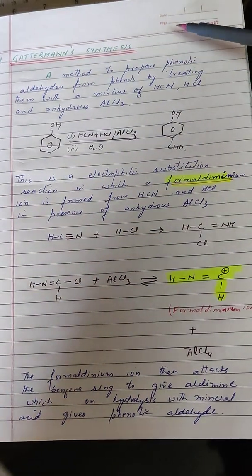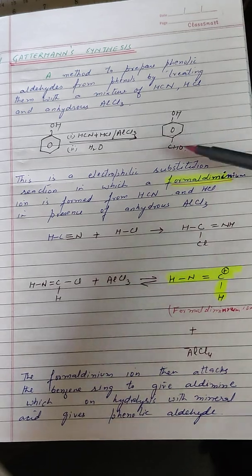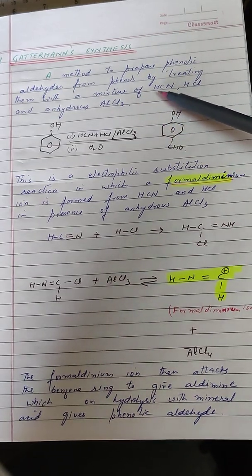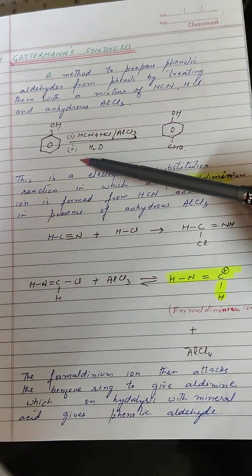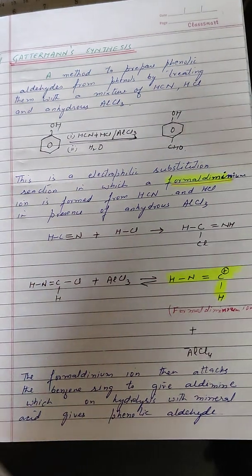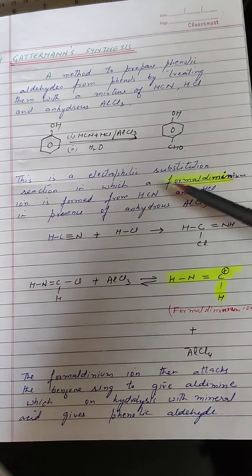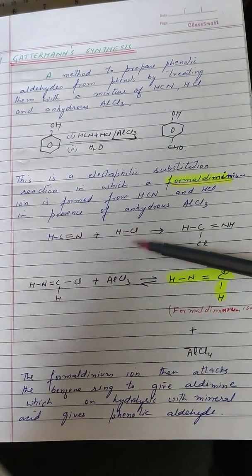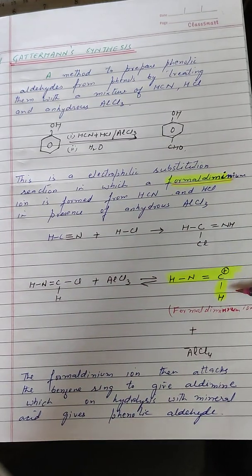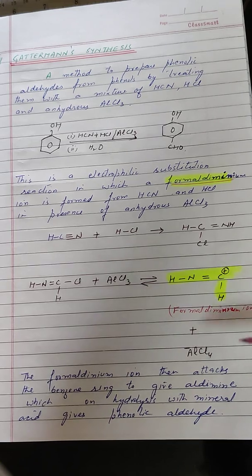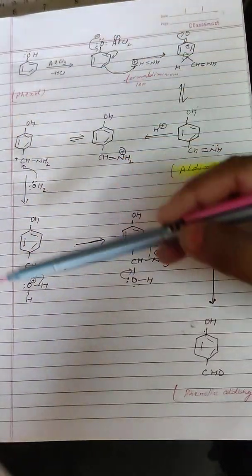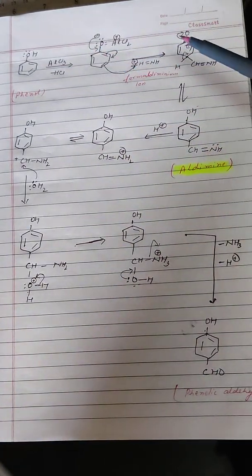Now we take up Gattermann synthesis, which is a method to prepare phenolic aldehydes. Phenol is treated with a mixture of HCN and HCl in the presence of aluminium chloride, followed by hydrolysis in the second step, to give phenolic aldehydes. This reaction is an electrophilic substitution where the formiminium ion — formed by the reaction of HCN with HCl in the presence of AlCl₃ — is the attacking species.